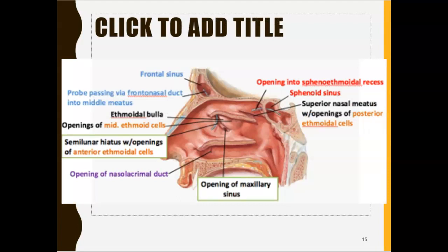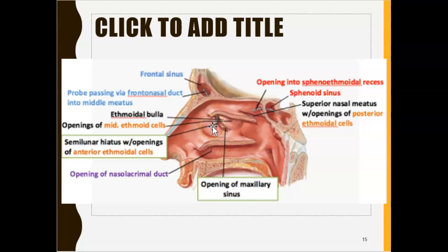Now let's look at drainage — this is the important part. The frontal sinus, which is in the front where the frontal bone is, has a duct. Any mucus here comes out through the frontal nasal duct. Where does it drain? It comes out from the middle meatus. Remember, the meatus is just a space where drainage can exit — superior, middle, and inferior.